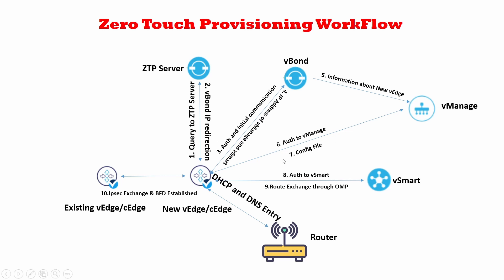Since vBond already provided the vSmart IP, the new vEdge also connects to vSmart. vSmart, the brain of the architecture, authenticates and validates the new vEdge. Once authentication is complete, they exchange routing databases — the vEdge sends its full routing database to vSmart, and vSmart sends its full routing database back — so the vEdge comes up with a complete routing table and all required policies.